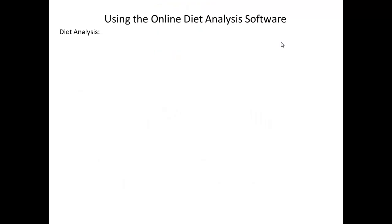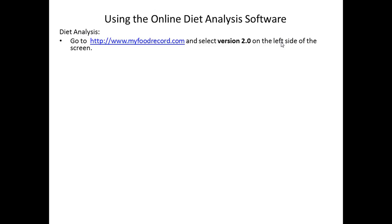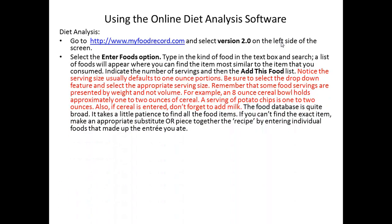Now I want to talk a little bit about the software we're going to use. We're not using the software that comes with your book because it goes into a lot of detail beyond the scope of what you really need to do. We will be using the MyNATS website, found at MyFoodRecord.com, and you'll select Version 2.0. You'll go to the Enter Foods option. Pay attention to the default serving size — it's usually quite small, far less than most people eat, so you'll need to make adjustments. This is the single reason many people lose points on their assignment: they fail to pay attention to portion size and number of servings.